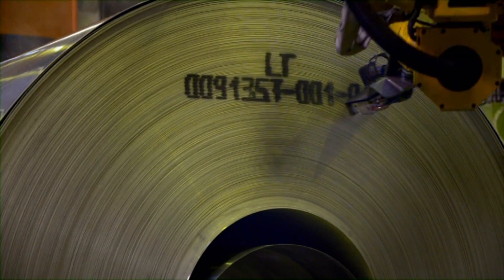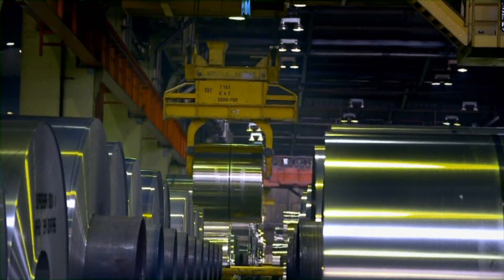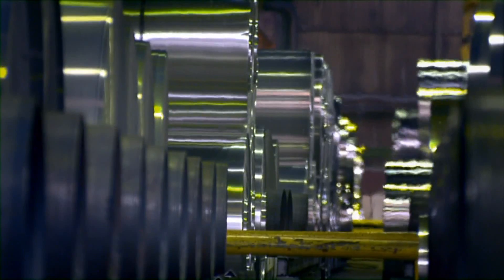Every single coil gets an individual code. The coils are then left to cool down for later transport to the cold rolling section.